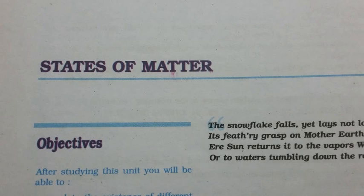5.6.2 Dalton's Law of Partial Pressures. The law was formulated by John Dalton in 1801. It states that the total pressure exerted by a mixture of non-reacting gases is equal to the sum of the partial pressures of individual gases, i.e., the pressures which these gases would exert if they were enclosed separately in the same volume and under the same conditions of temperature. Mathematically: P_total = P₁ + P₂ + P₃ + ..., where P_total is the total pressure and P₁, P₂, P₃, etc. are the partial pressures of the individual gases.